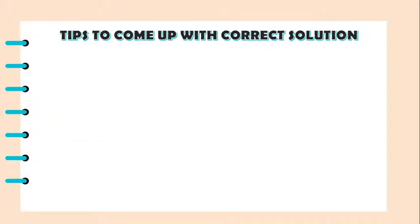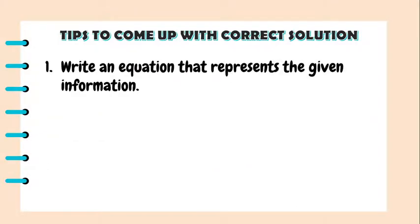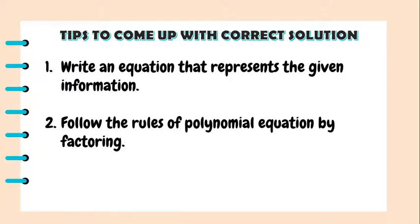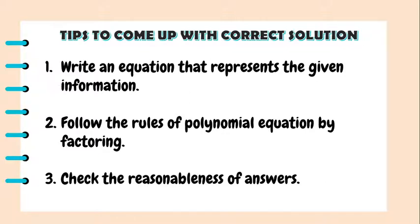Here are some tips to come up with a correct solution. Number 1: write an equation that represents the given information — you can draw a picture or a diagram to help figure it out. Number 2: follow the rules of polynomial equations by factoring, placing all polynomials on one side of the equation and setting it equal to 0, following the zero product property. And number 3: check the reasonableness of answers, meaning you have to discard solutions that do not make sense.